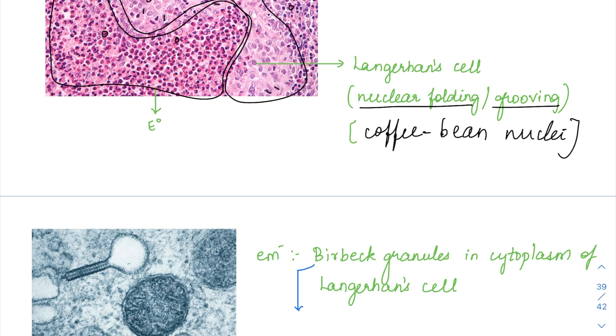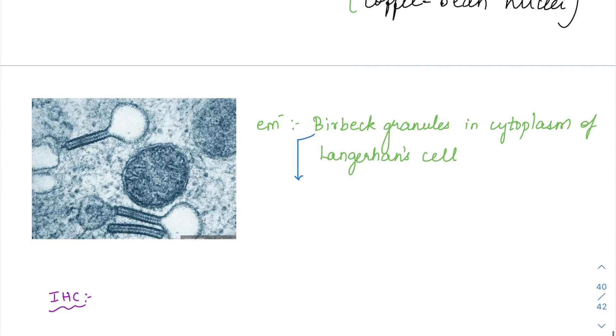This coffee bean nuclei, where else did we see? Wherever the nuclear groove is present, coffee bean nuclei will be present. One thing was in this LCH. Secondly, in papillary carcinoma of thyroid, again you can have this nuclear grooving. Then again in two things in the ovary. One thing will be the Brenner's tumor. Brenner's tumor is an epithelial tumor. There you have a coffee bean nuclei and lastly, you can also see it in granulosa cell tumor which is a sex cord stromal tumor in ovary. All these four conditions, you can have this coffee bean nuclei.